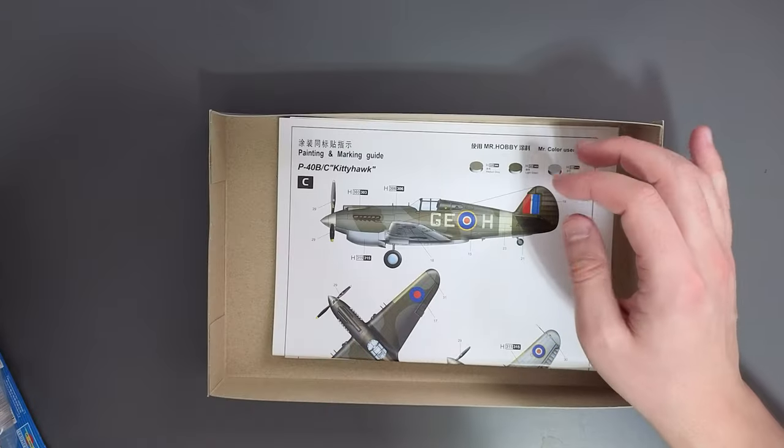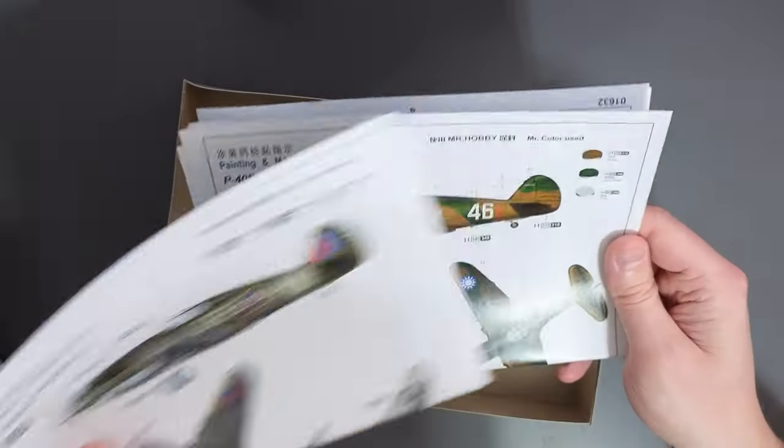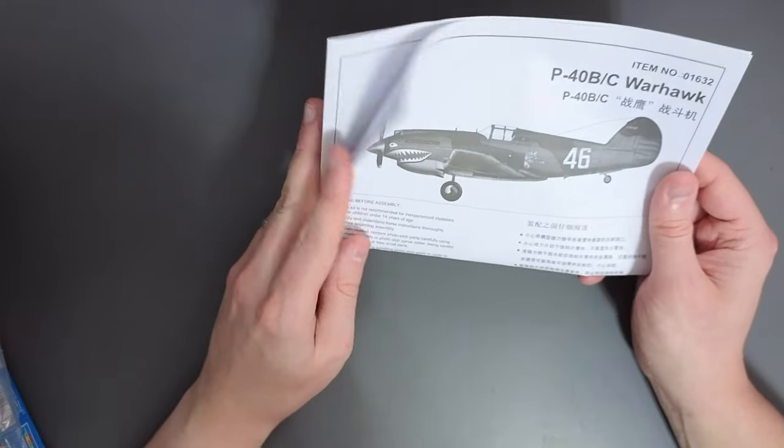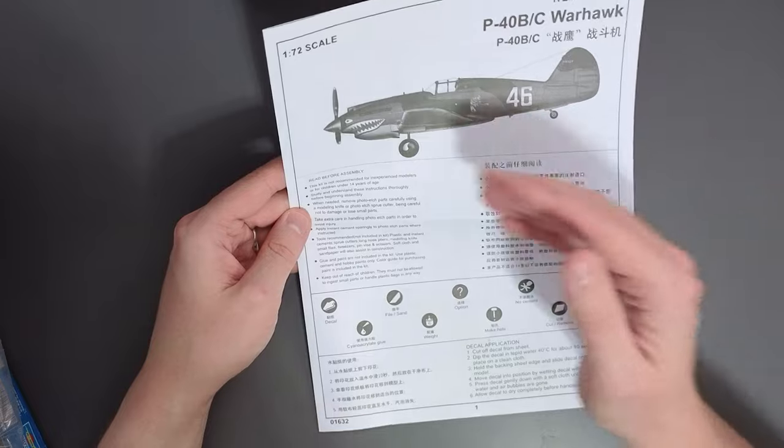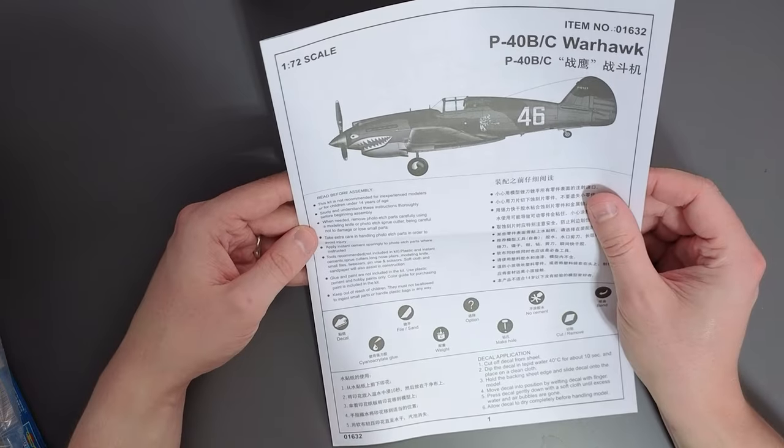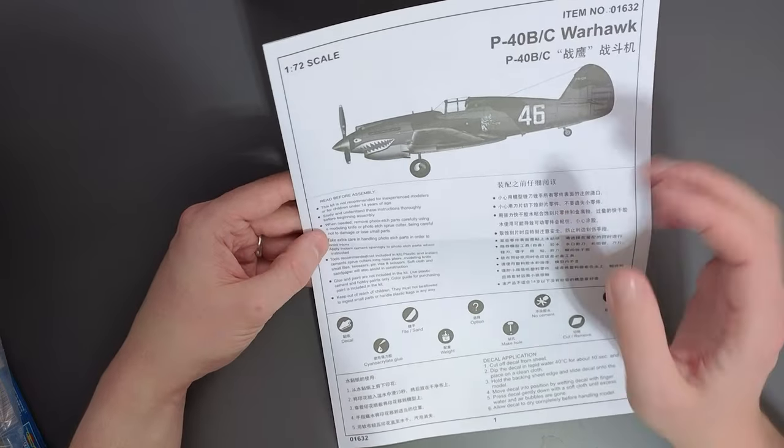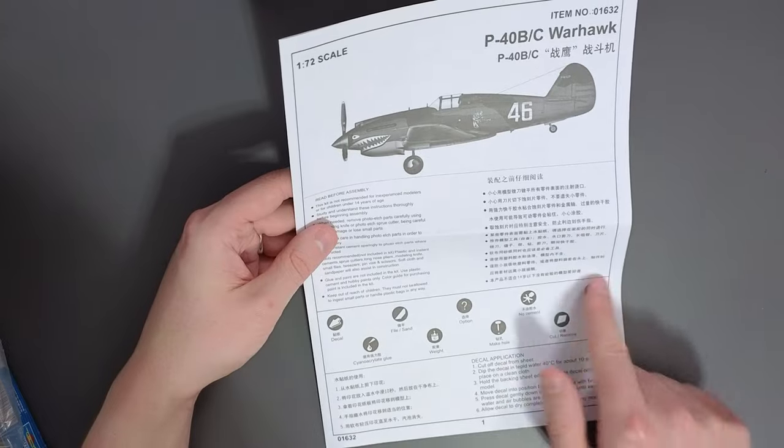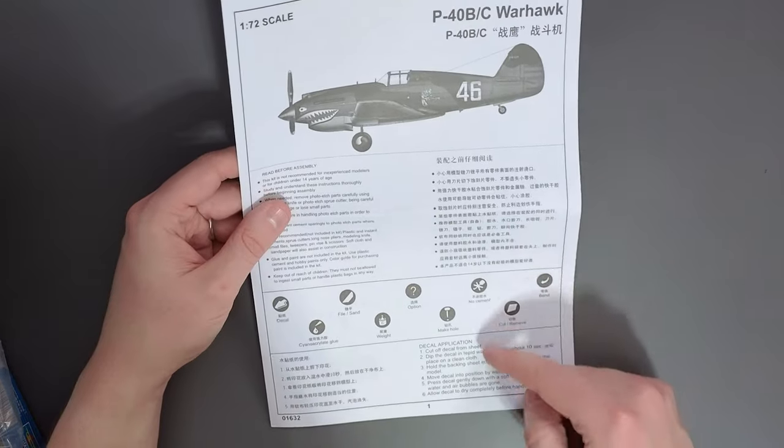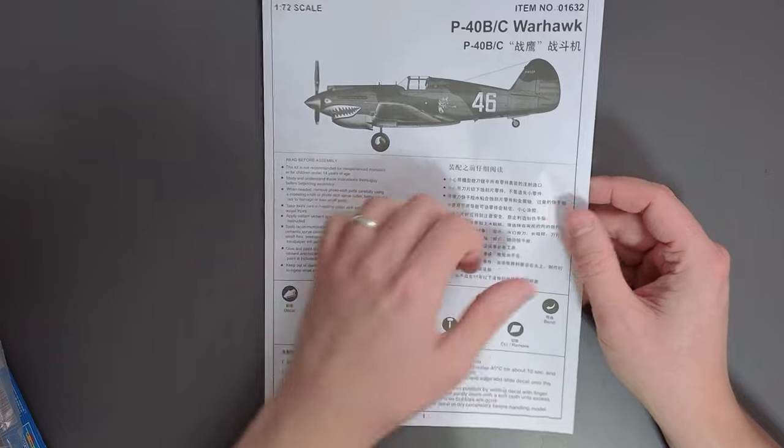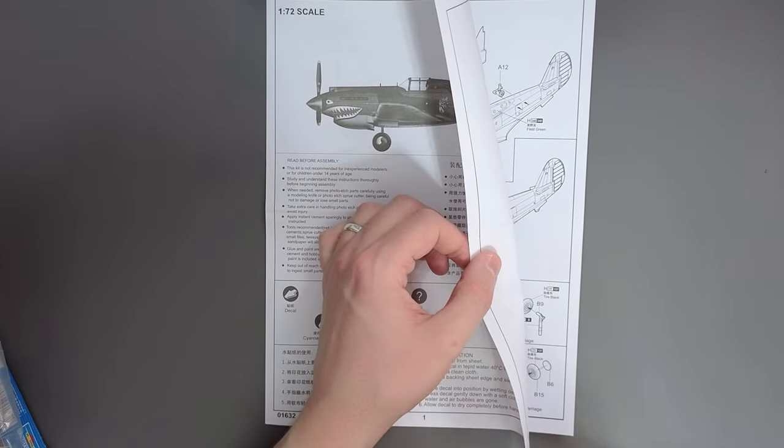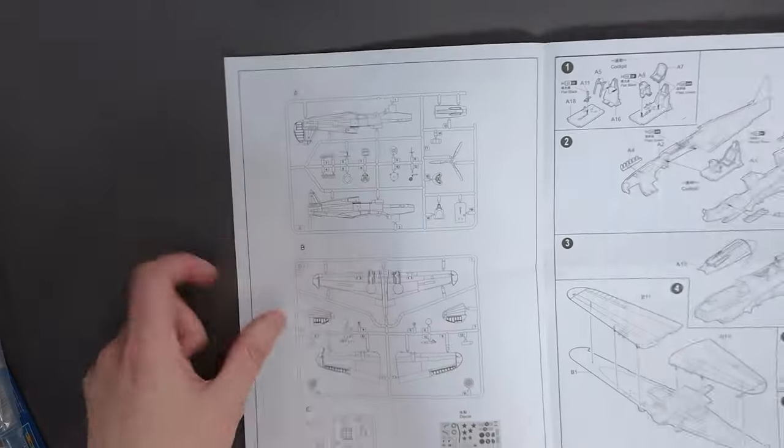Let's get the box open and see what we've got. So let's put the plastic parts to one side, let's put the transfers to one side, let's put the painting instructions to one side and find the actual assembly instructions. We've got some information here about taking care how to use the glue. We've got a key to the symbols down the bottom and we've got information on how to do the transfers.